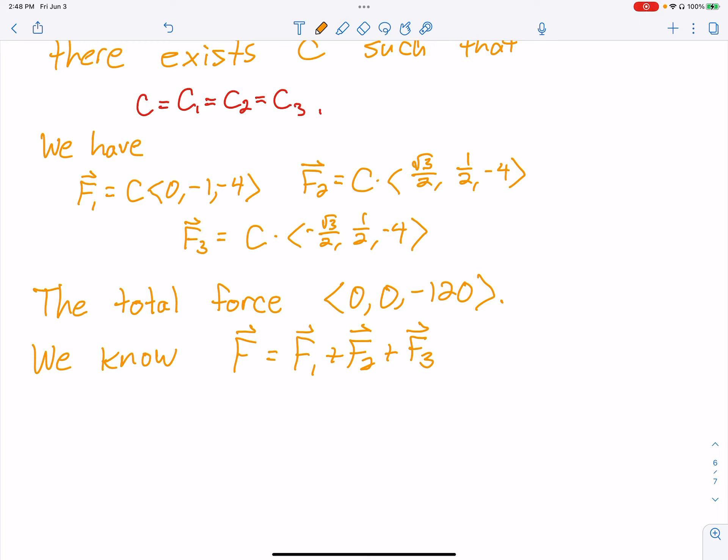So if we look at our third components, let me highlight these. It's -4C, -4C, and -4C. If I add all of those up, it has to add to -120. So -4C - 4C - 4C must be -120. That is, -12C equals -120, which tells me C is 10.